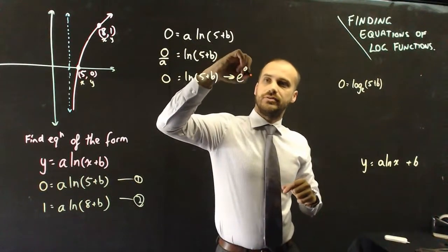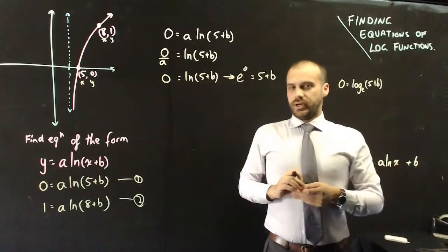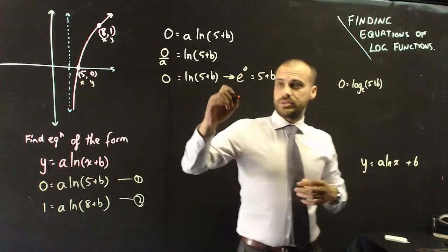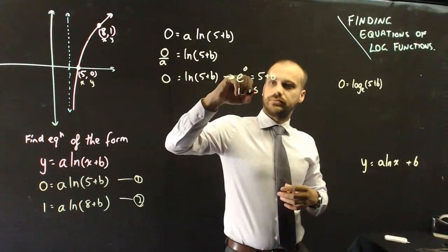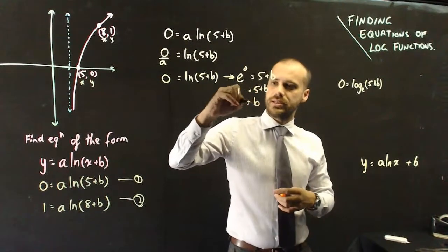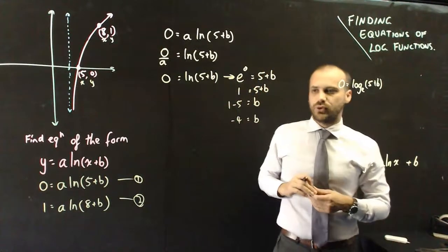That's going to be the same as e to the power of 0 equals 5 plus b. e to the power of 0, it's a number to the power of 0. Anything to the power of 0 is 1. And then b is going to be equal to 1 minus 5. b is going to be equal to negative 4.